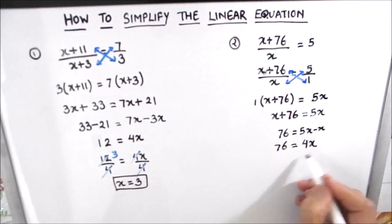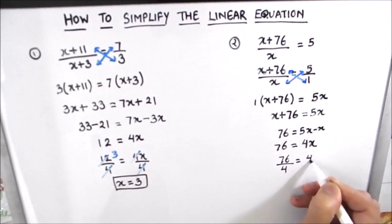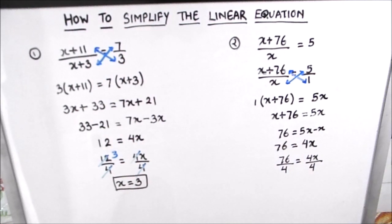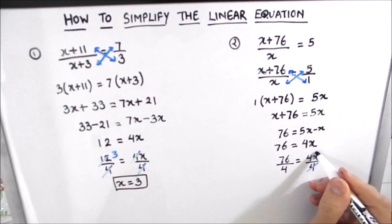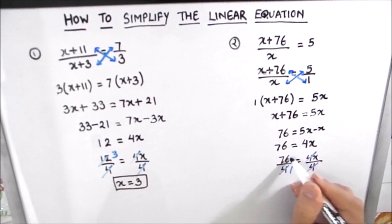For finding the value of x we will divide both sides by 4. So 4x divided by 4 is equal to 76 divided by 4. So these two 4s get cancelled. 4 times 1 and 4 times 19. So the value of x is equal to 19.